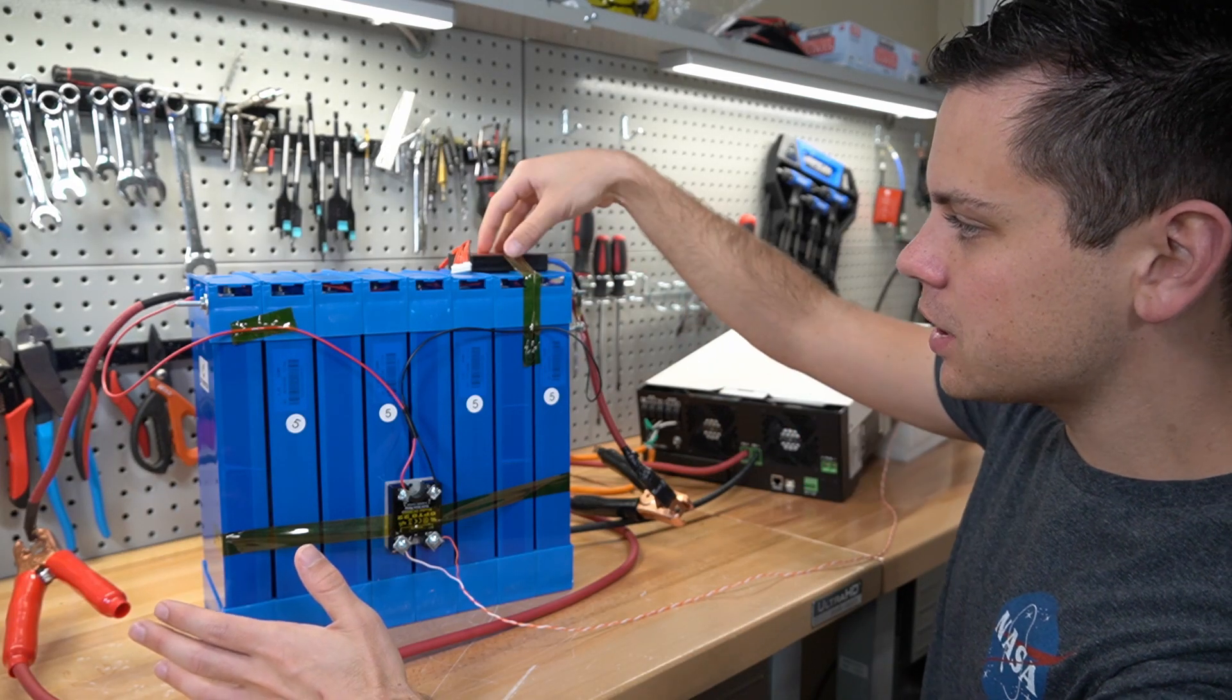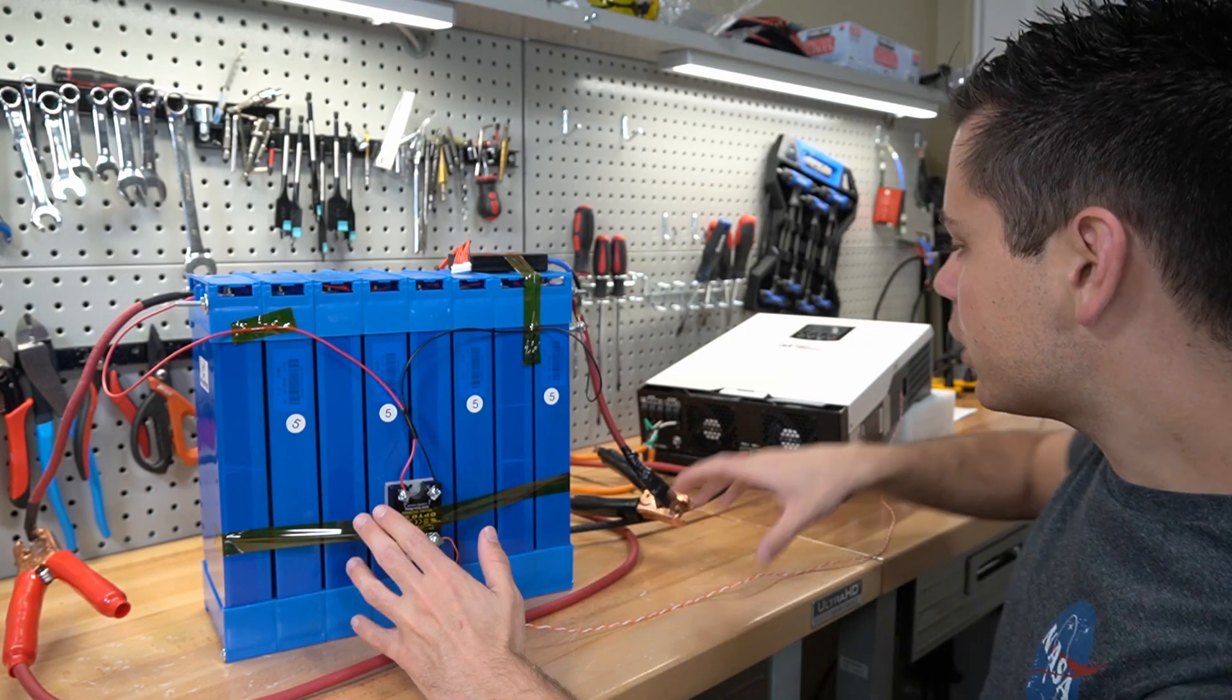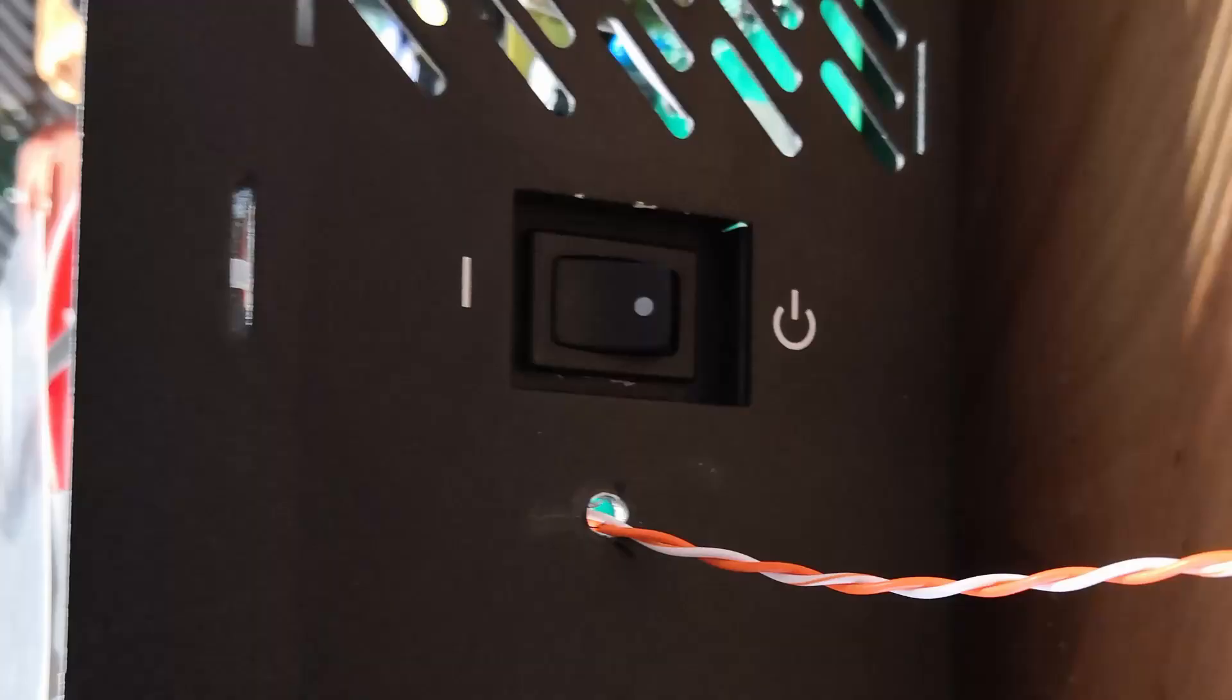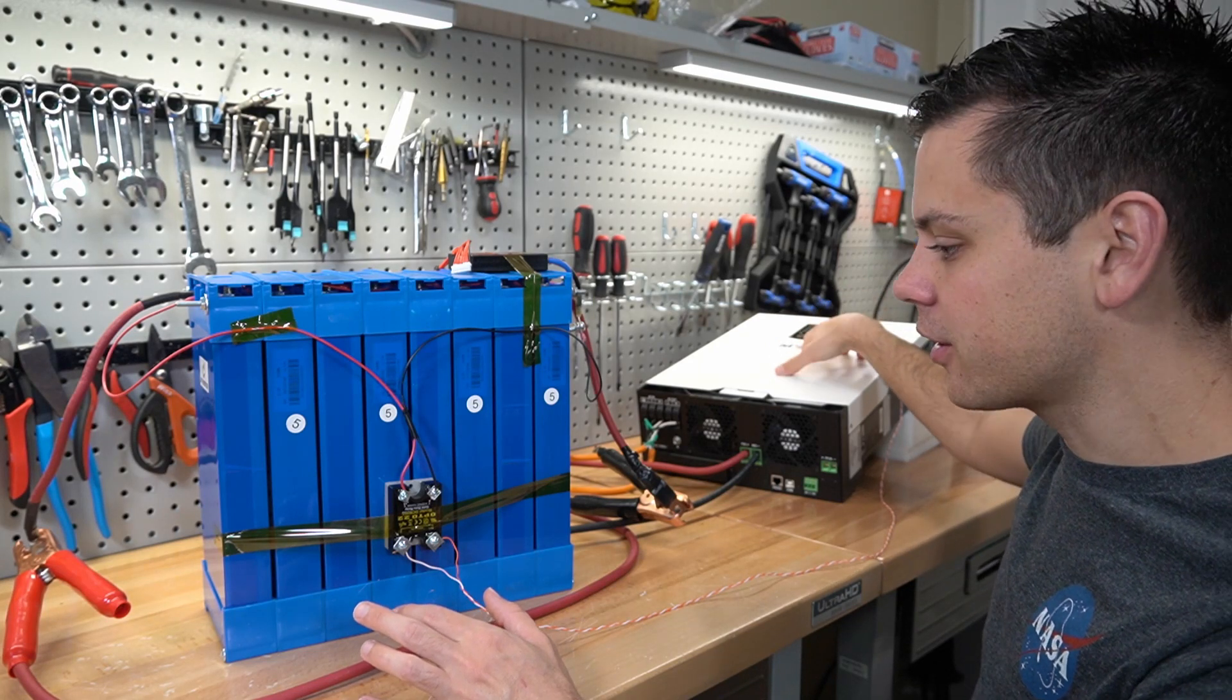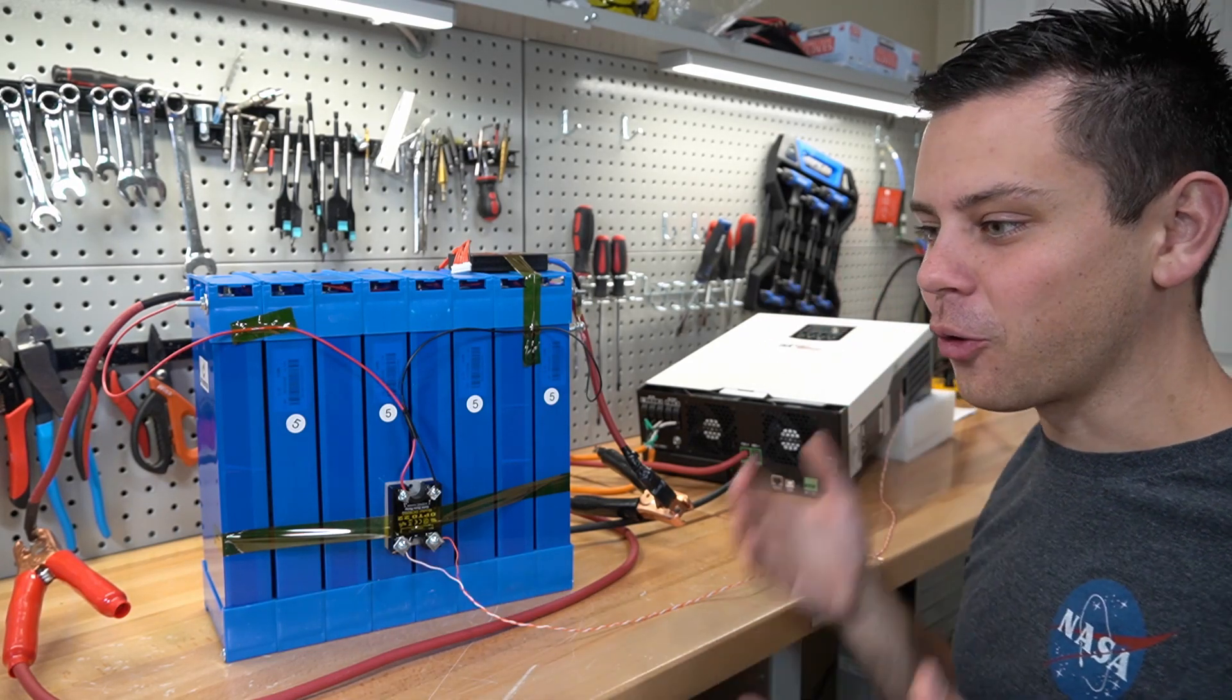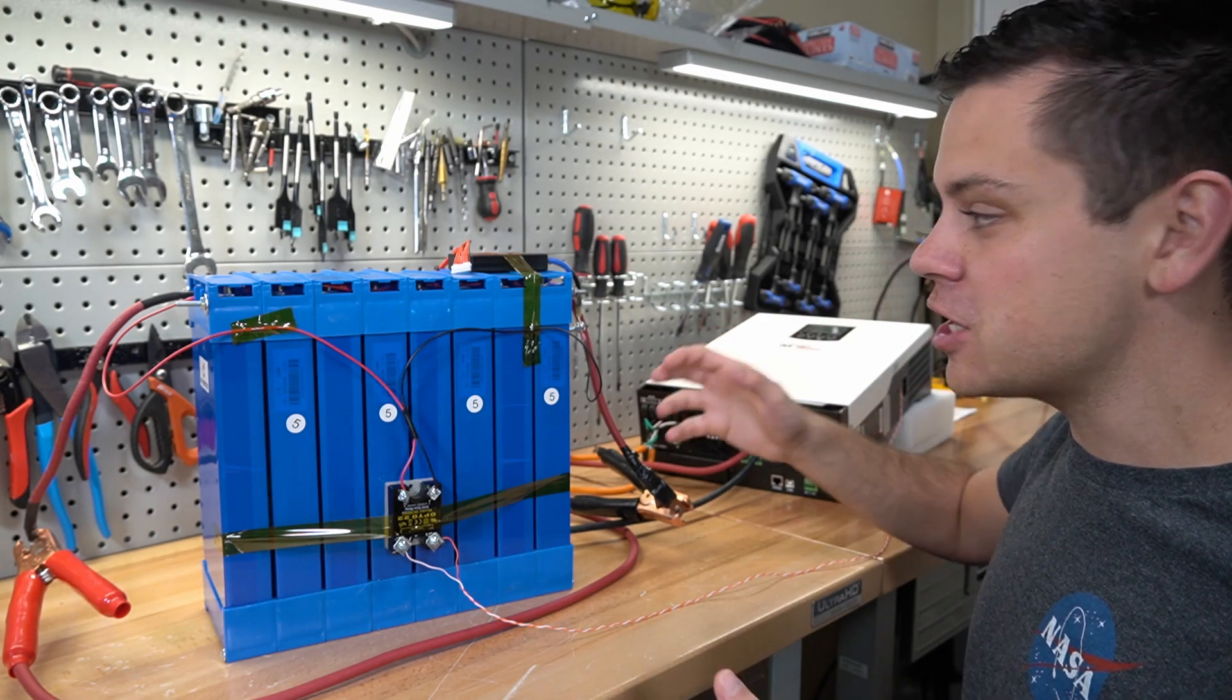And so what we're going to do instead is use the BMS to control a solid state relay that will control the inverter at the on and off switch. So we're going to make some slight modifications to this inverter but we will be able to make an incredibly powerful and long-lasting system with very cheap components.